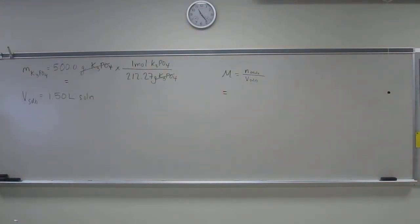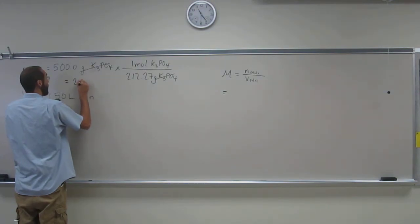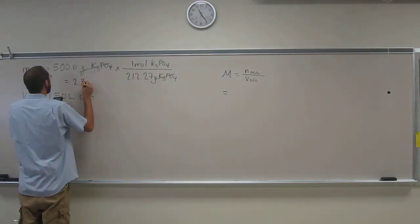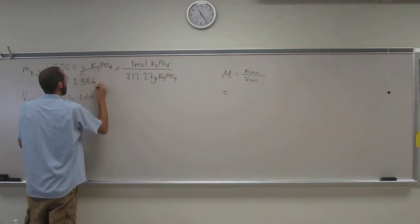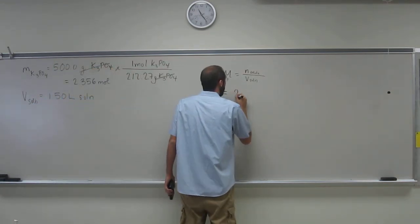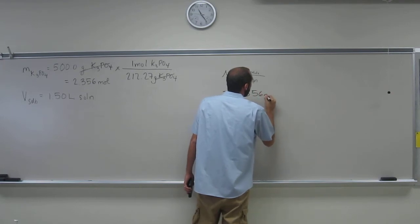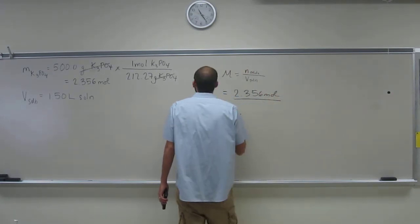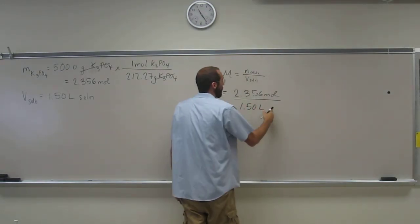Okay. So let's do that. We have 500 divided by 212.27. That gives us 2.356 moles divided by 1.50 liters of solution.